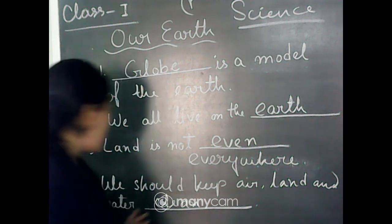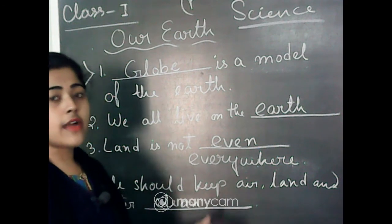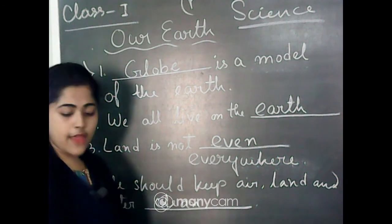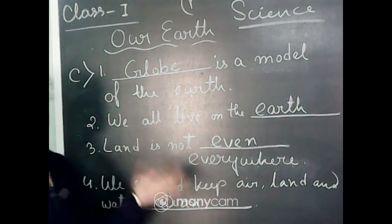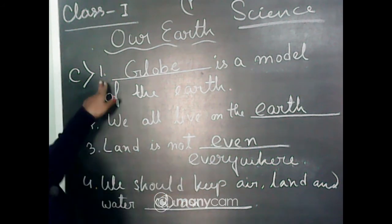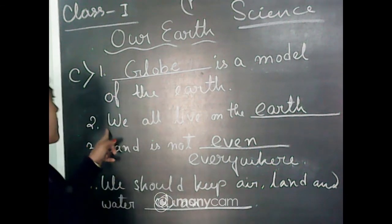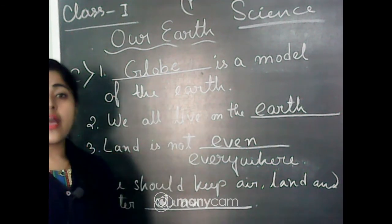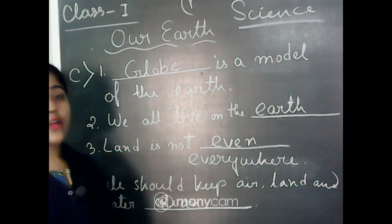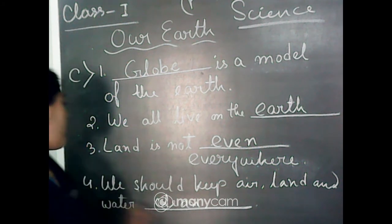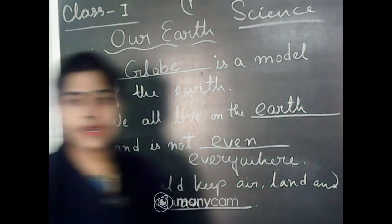We should keep air, land, and water clean — I told you this at the beginning of the class. Now let me repeat the answers for Question C: first, globe is a model of the Earth; second, we all live on the Earth; third, land is not even everywhere; fourth, we should keep air, land, and water clean.